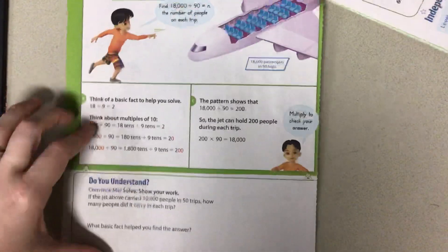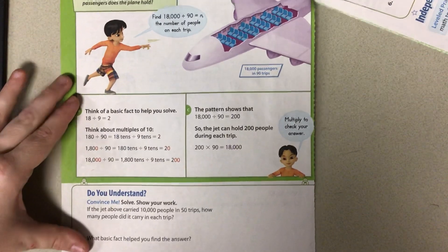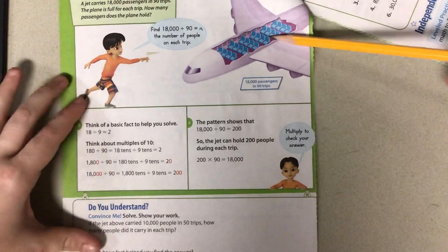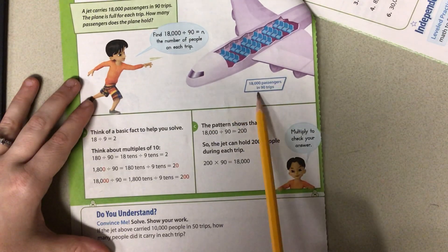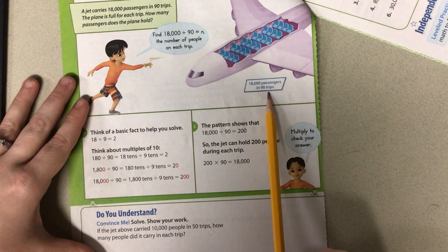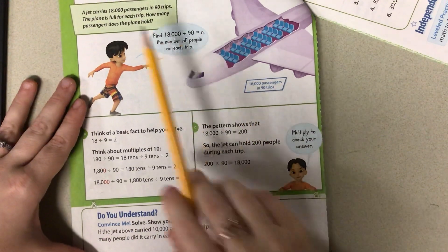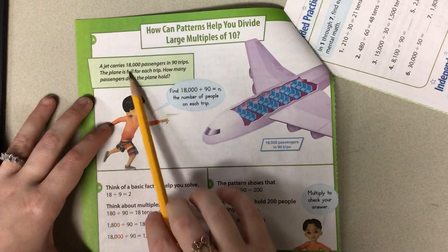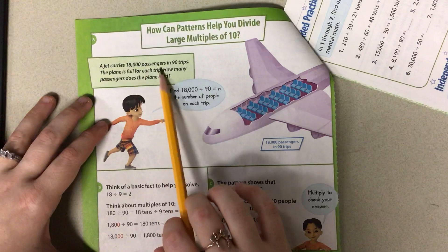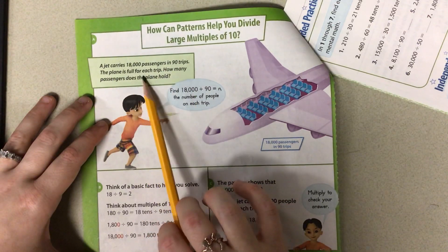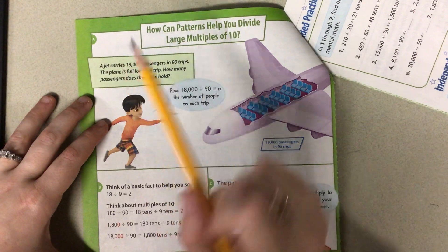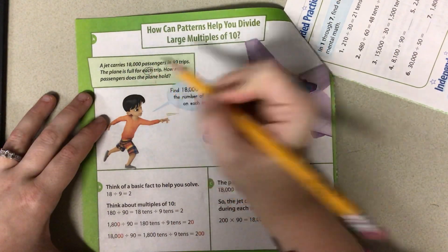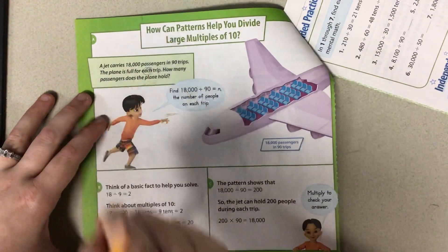We need to know this part first. We have this jet up here. This jet holds 18,000 passengers in 90 trips. A jet carrier carries 18,000 passengers in 90 trips. The plane is full in each trip. How many passengers does the plane hold?